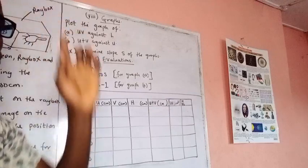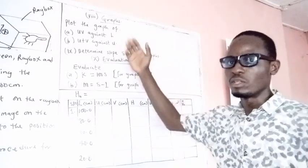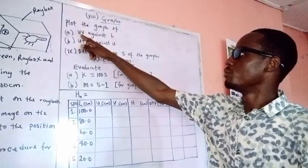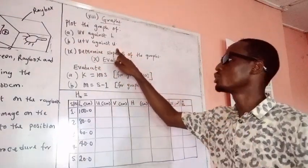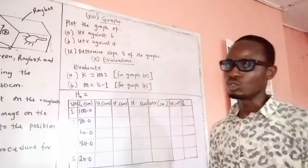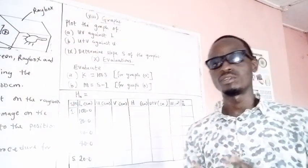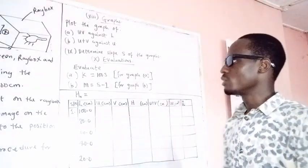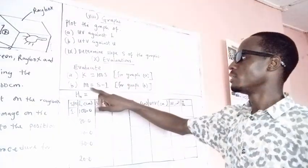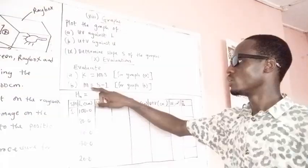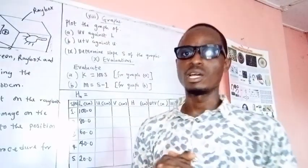There are two possible graphs. I'll plot one of them in this video — you can plot the other yourself. The first is the graph of uv against L, and the second is the graph of u plus v against u. Determine the slope of whichever graph you choose. For the first graph, k equals 100 multiplied by the slope. For the second graph, the slope gives n. Know all the precautions needed to obtain accurate results.